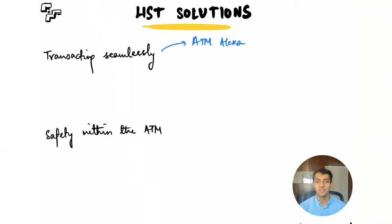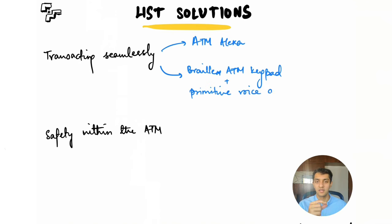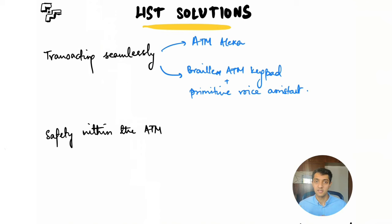The second solution for seamless transactions is a combination of a Braille keypad with a primitive voice assistant. A Braille keypad is a normal keypad with Braille markings to signal which key corresponds to what. The primitive voice assistant provides voice-based prompts such as 'press 1 for checking account balance, press 2 for transactions, press 3 for other activities,' and the user presses the corresponding key. The voice gives directions and the Braille keypad lets them operate the machine confidently.